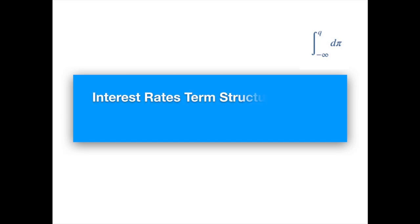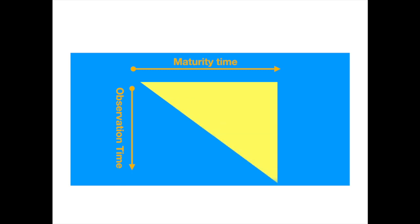Hello everyone and welcome to QuantPi. It's high time we tackle the HJM framework. The HJM models the dynamics of an instantaneous forward that references a fixed maturity time capital T. There is a continuum of such forwards, but you can develop the whole framework by focusing on just one generic maturity, say capital T.